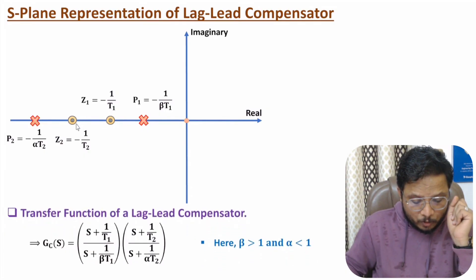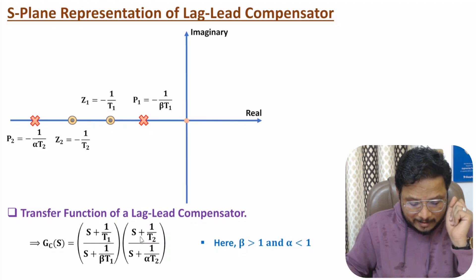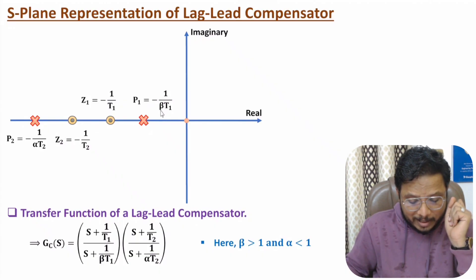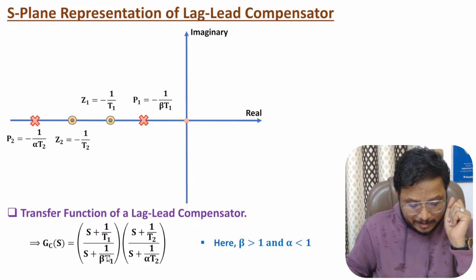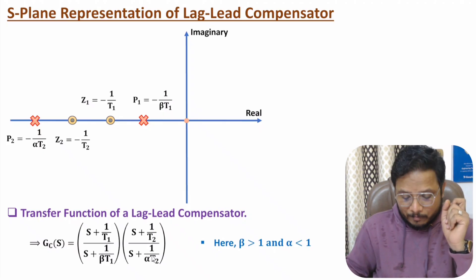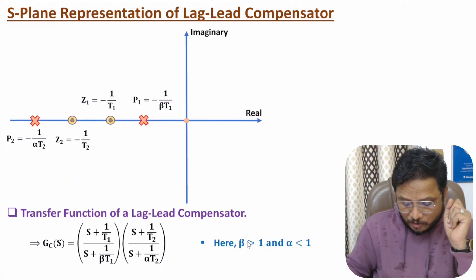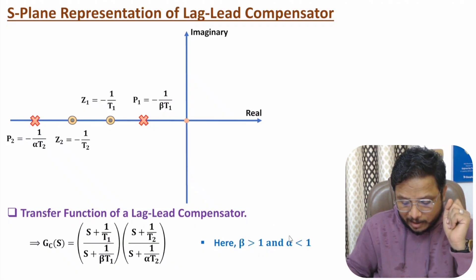Based on these poles and zeros, the transfer function has two zeros: (s + 1/T1) and (s + 1/T2), and two poles: (s + 1/beta-T1) and (s + 1/alpha-T2). Always remember: beta must be greater than one for the lag configuration, and alpha must be less than one for the lead configuration.